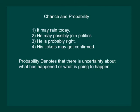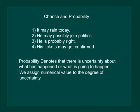Hence, we can say that the word probability denotes that there is uncertainty about what has happened or what is going to happen. And later in this chapter, we will study how to assign numerical value to the degree of uncertainty. And that will be called probability. Or in simple layman's language, when we are able to measure chances in terms of numerical values, that is called probability.